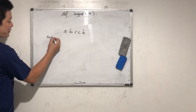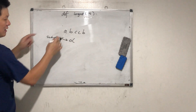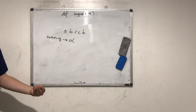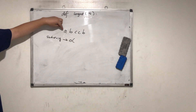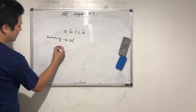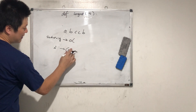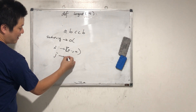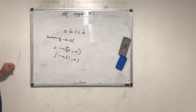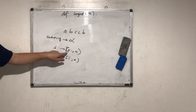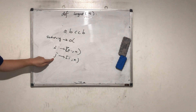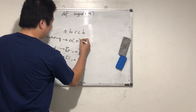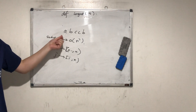Every time we brute force substrings in a string, we need to fix a left and a right index. We brute force the left and the right — left index and right index. I will range from 0 to N, and then J will be from I to N. So the time complexity — if I use a loop from 0 to N-1 and a second loop from I to N — that's O(N²).